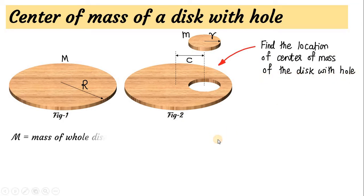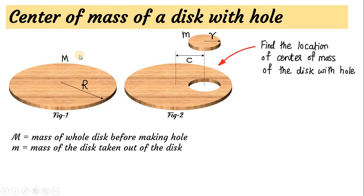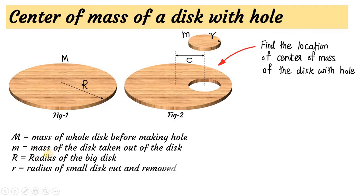Let us proceed. In this diagram, capital M is the mass of the whole disc before making the hole. Before making the hole, the initial mass of the disc is capital M. Small m is the mass of the disc taken out of the bigger disc. Capital R is the radius of the big disc, and small r is the radius of the small disc cut and removed. C is the centre-to-centre distance. We need to derive a formula for this condition.